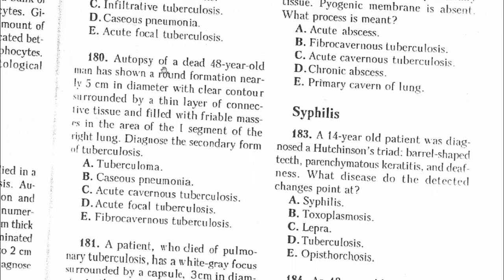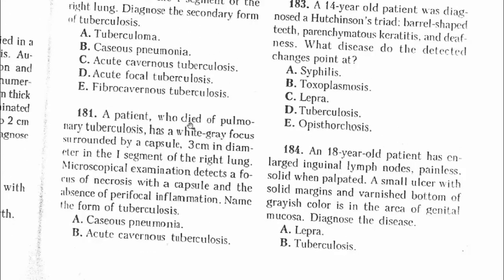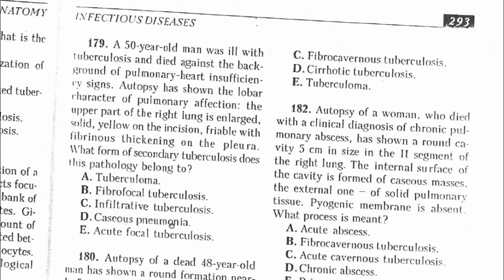Question 180: Autopsy of a dead 48-year-old man showed a round formation of nearly 5 cm in diameter with clear contours, surrounded by a thin layer of connective tissue and filled with masses in the area of the anterior segment of the right lung. This is definitely tuberculoma. Question 181: A patient who died of pulmonary tuberculosis has a white-gray focus surrounded by a capsule of fibrous tissue; microscopy detects a focus of inclusivity with a capsule and absence of perifocal inflammation. This is tuberculoma.